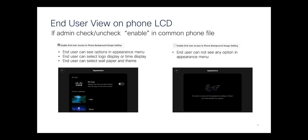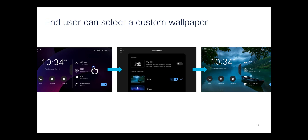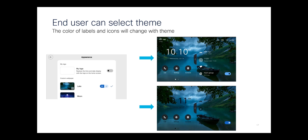If the box in the common phone profile is checked and the end user is able to change the background, this is what they see on the left. And on the right, if that box is unchecked, that's what they see if they try to go into appearances. And if they are allowed to change the wallpaper, this is basically the workflow of what that looks like.